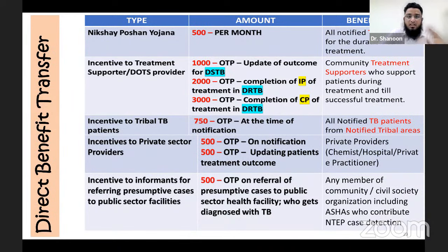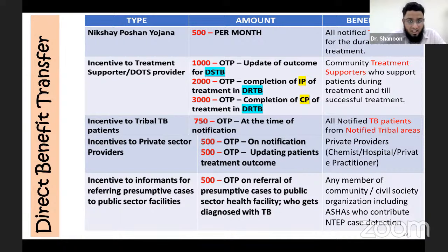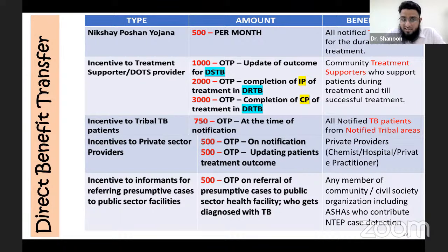Another aspect of community outreach is Direct Benefit Transfer (DBT). The Nikshay Poshan Yojana provides 500 rupees per month to TB patients for the duration of treatment. Incentives to treatment supporters and DOTS providers include: 1,000 rupees one-time payment on update of outcome for drug-sensitive TB patients; 2,000 rupees for completion of intensive phase of drug-resistant TB; 3,000 rupees for completion of continuation phase treatment in drug-resistant TB. There is also an incentive of 750 rupees for tribal TB patients at the time of notification. For informants referring presumptive cases to public sector facilities, a 500 rupees one-time payment is given — eligible to any community member, civil society member or ASHA.